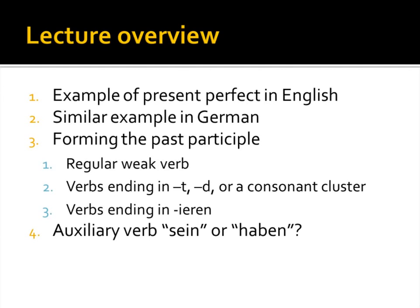We'll look at regular weak verbs — how to form the past participle of a regular weak verb — forming the past participles of verbs that end in a T, a D, or a consonant cluster, for example like a GN. And also verbs that end in -ieren, like fotografieren, diskutieren, or spazieren.